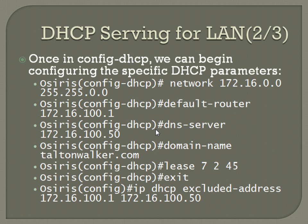It's also going to need to know the domain name, so: 'domain-name townwalker.com'. Then you may want to modify the lease time to let DHCP know how long each device gets to hold on to its IP before it has to renew or get a new lease. The command is 'lease' followed by days, hours, and minutes. In this case: lease 7 days, 2 hours, and 45 minutes.